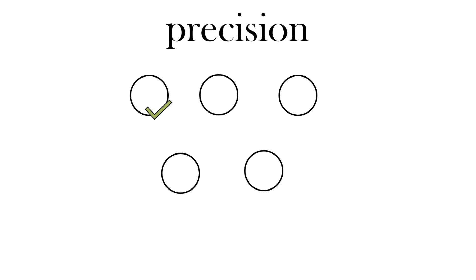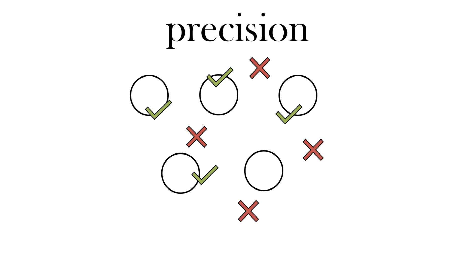Here are five targets and we're going to shoot at them. After 10 shots, we had hits and misses resulting in 4 hits out of 10 shots. So that was 40% precision.